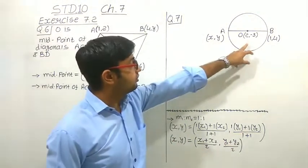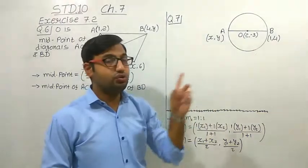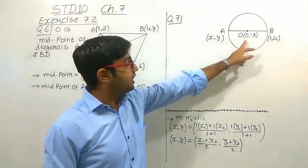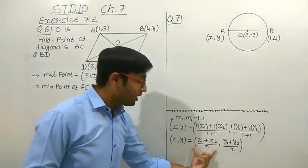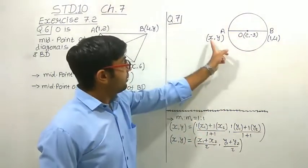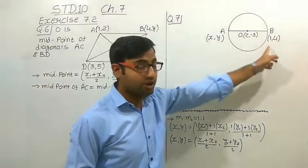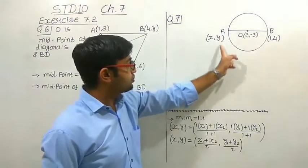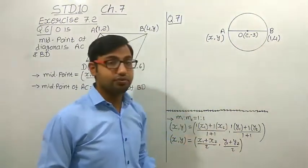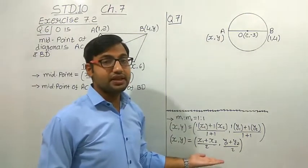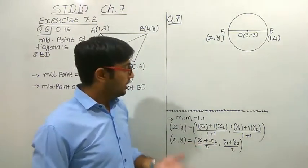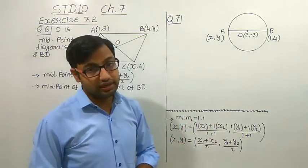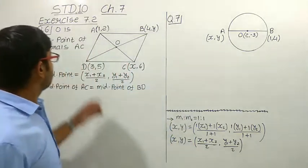So when there is a point which divides the line segment into two equal parts — that means the point is the midpoint — we can find the coordinate of that midpoint directly by adding the X coordinates of the first and second point and dividing by 2, and similarly Y1 + Y2 divided by 2. This is the special case of the section formula. Let us study examples related to this. Question number 6 is: